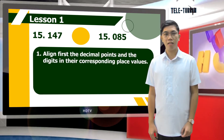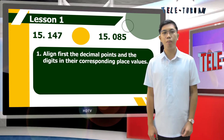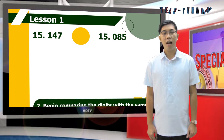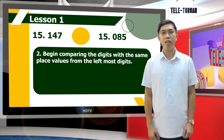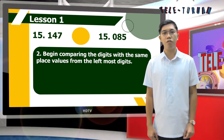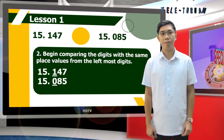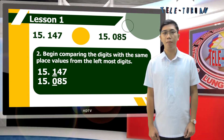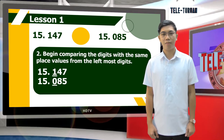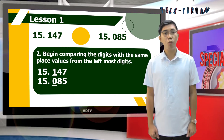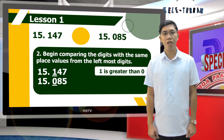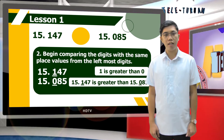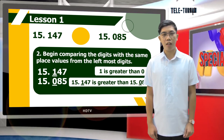In comparing decimals, align first the decimal points and the digits in their corresponding place values. After the first step, begin comparing the same place values from the leftmost digits. Since we have the same digits for the tenths and ones place, proceed with the tenths place. Between one and zero, one is greater than zero. Therefore, fifteen and one hundred forty-seven thousandths is greater than fifteen and eighty-five thousandths.